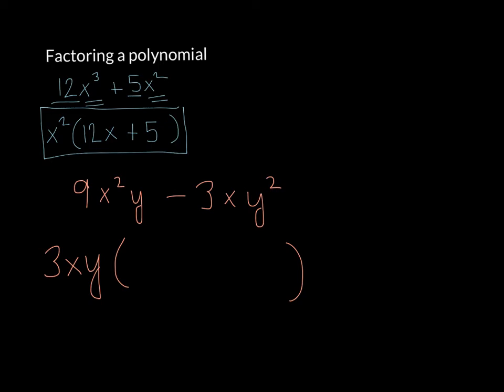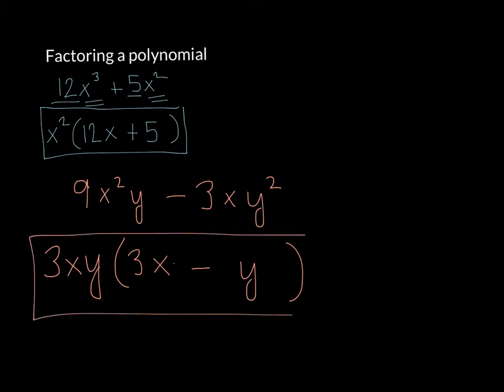Now we're going to divide each of these terms by that greatest common factor. 9 divided by 3 is 3, x squared divided by x is x, and y divided by y reduces all the way — so we don't even put it there. If every term canceled out though, you do need to make sure it's a 1. For the second term, 3 divided by 3 is 1, x divided by x is 1, and y squared divided by y is y — so that gives us just y. And this would be the most factored this polynomial can be.